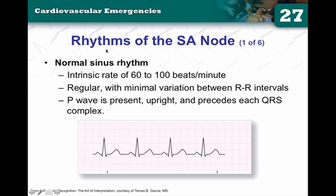When we say a rhythm is sinus in nature, all we're saying is that there's a P wave and that the P wave is upright and rounded — it is a sinus P wave. Remember, just because there's a P wave doesn't mean it's sinus. If the P wave is upright and rounded, it means it's sinus. If it's something other than upright and rounded — like peaked or flipped upside down — it might be a different rhythm.